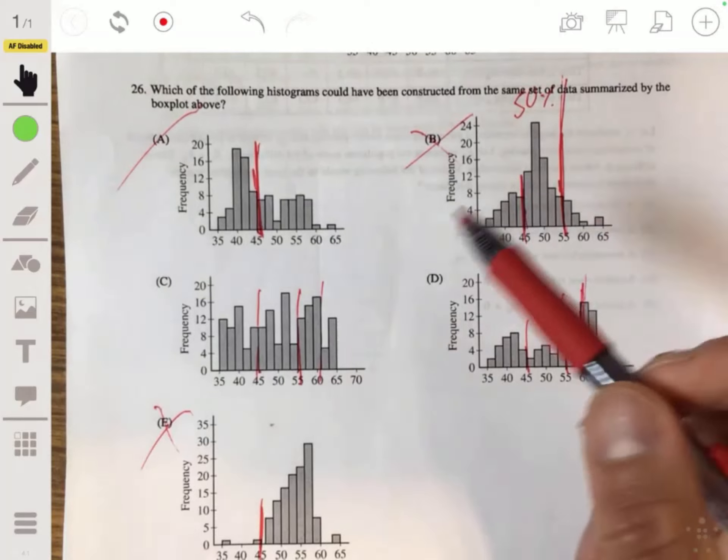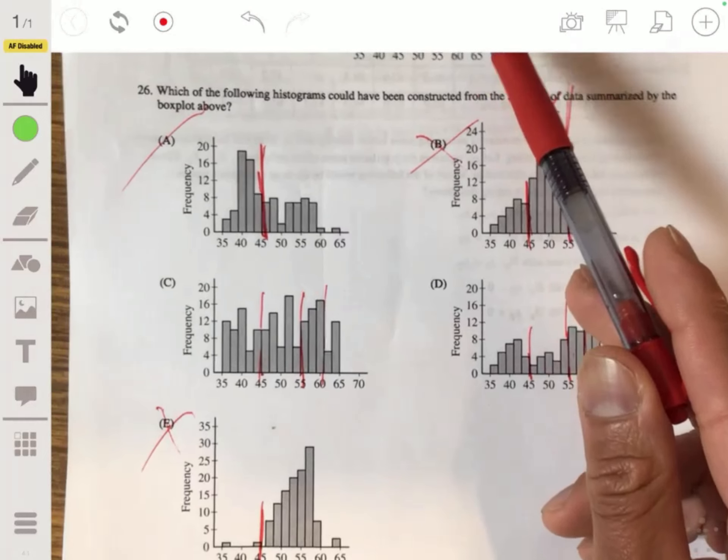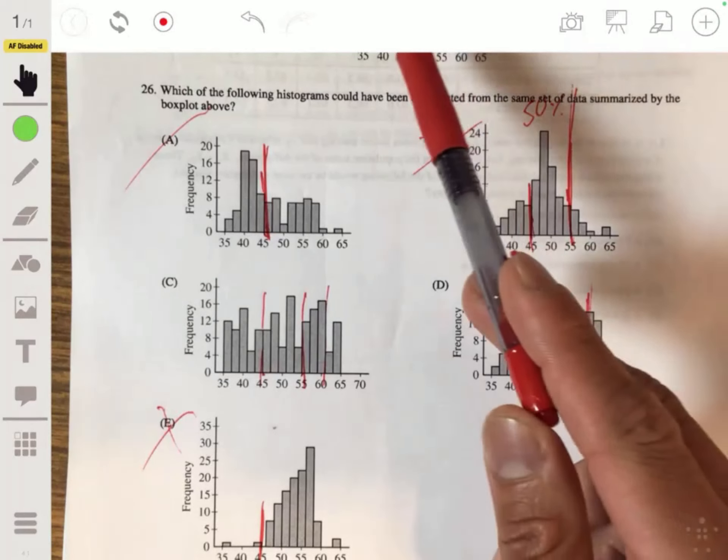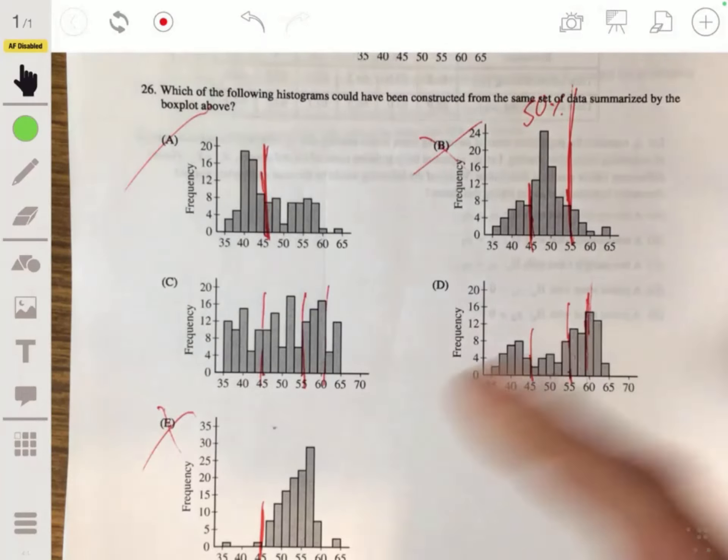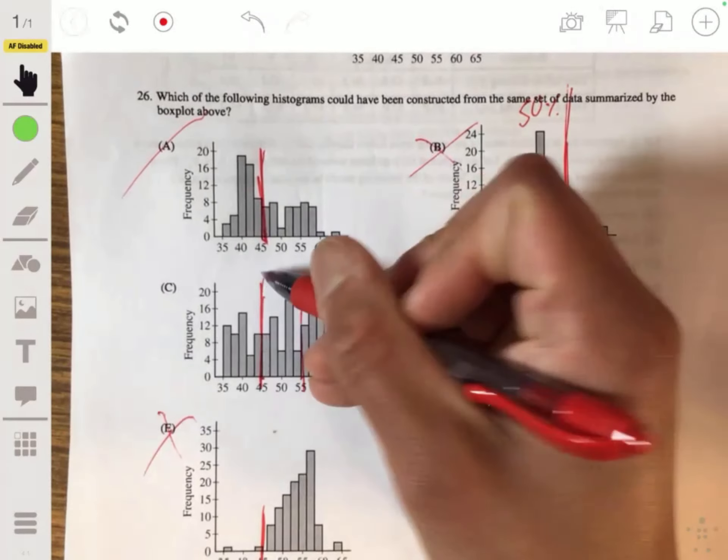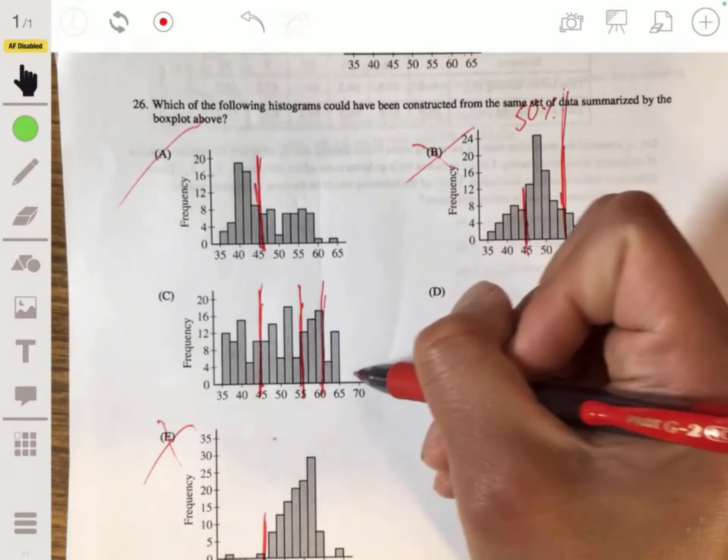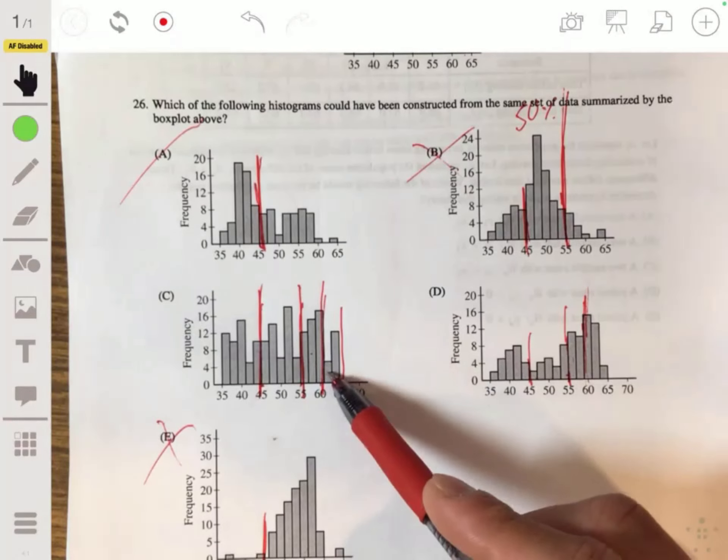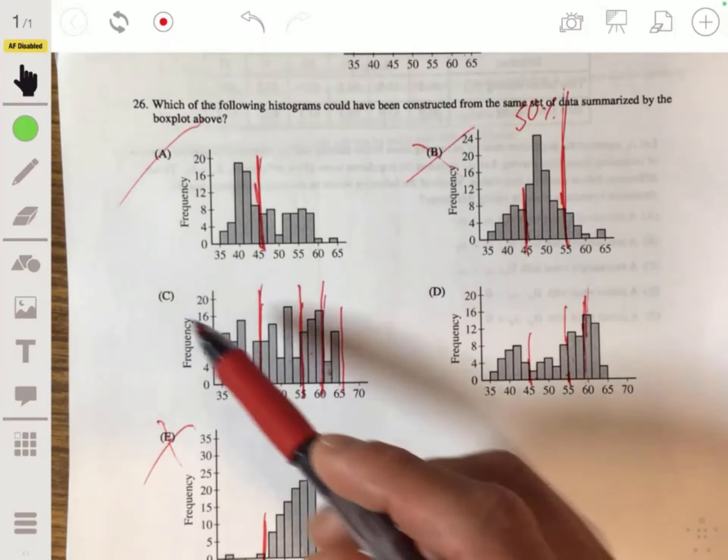Okay, so then down to C and D. Let's see which would work. 25% of the data has to be from 35 to 45. So another way to look at it - where it's divided at 45, 55, 60, and then 65, all those have the same amount of values. Looking at this, you can tell that this definitely has a lot less than this, and definitely a lot less than this. So it's not going to be C.